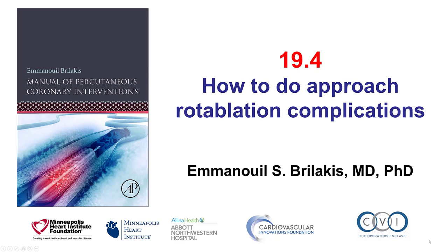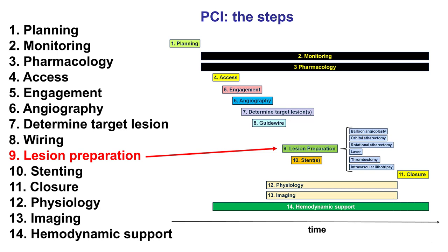This is Manos Berlakis and this is video 19.4 for the Manual of Percutaneous Coronary Interventions. This video discusses how to approach complications of rotational atherectomy, which also applies to a large extent to complications of orbital atherectomy. Both rotational and orbital atherectomy are forms of lesion preparation, which is step number nine of the 14 steps of percutaneous coronary intervention.